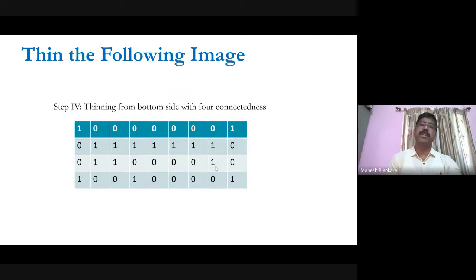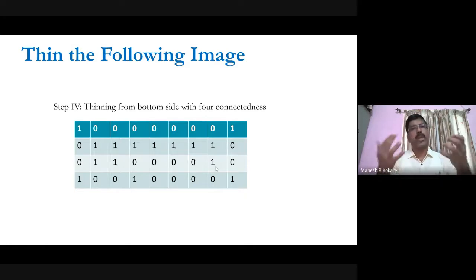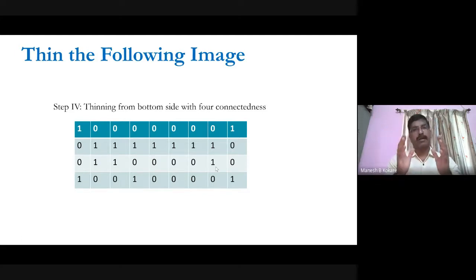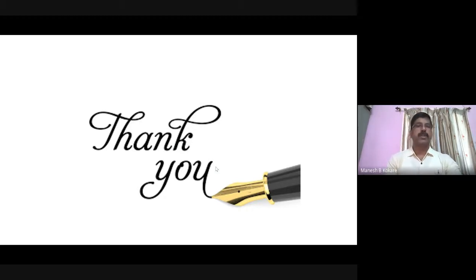This concludes the discussion on how to obtain the skeleton of an object using different approaches. In the next lecture, we will study how to obtain the graph from the skeleton, and after that, graph-based matching techniques can be used for recognition of objects in computer vision. Thank you very much.